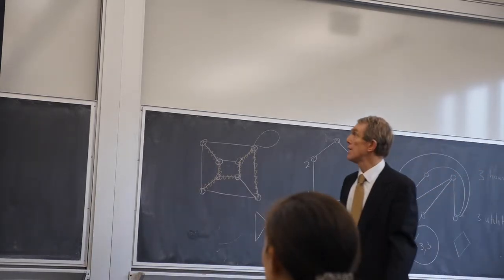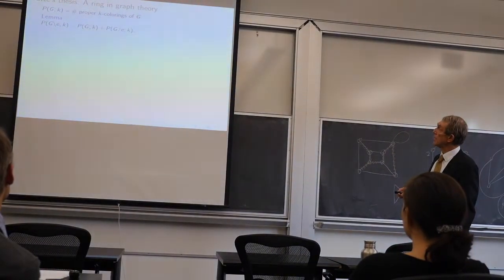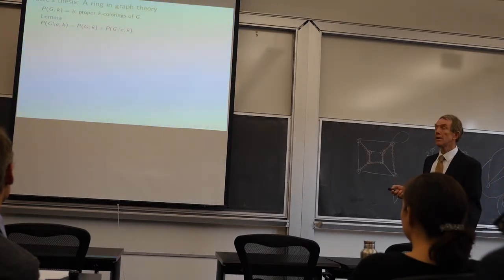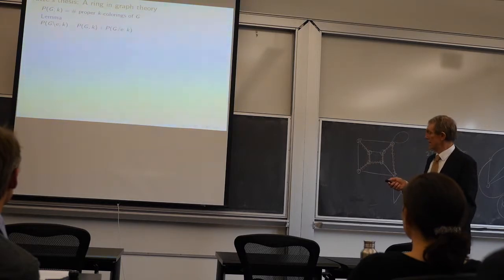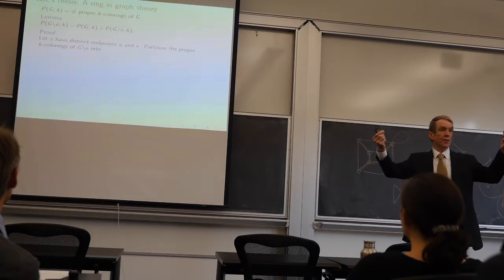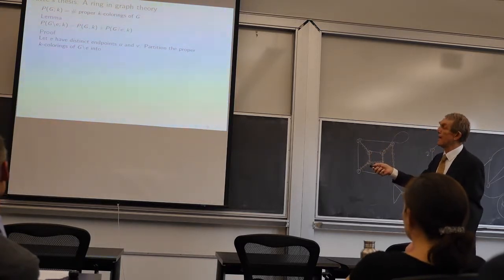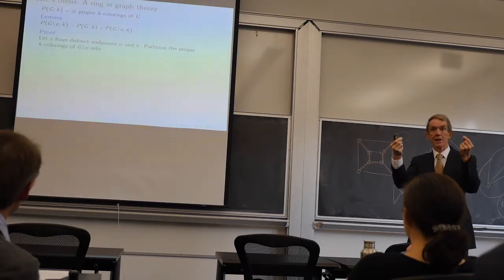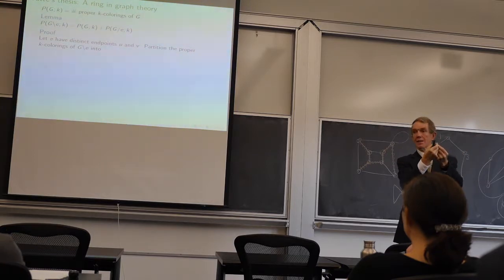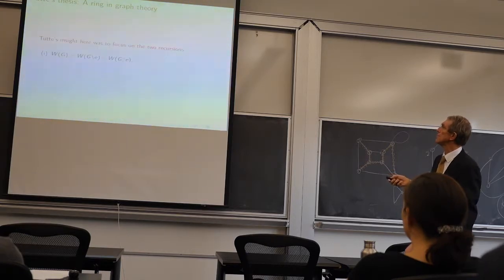This graph has no two colorings, proper two coloring, but it does have three coloring. And here's another deletion-contraction result. Look at the number of colorings of G deletion with k colors. That's the number of G plus the number of G contract k. How do you prove that? Well, take E, it's got distinct endpoints U and V.